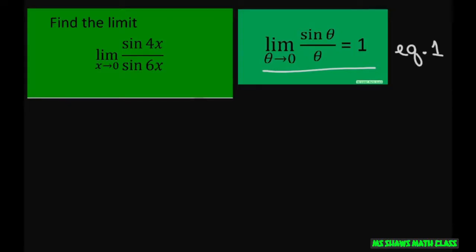So limit as theta approaches 0 of sine of theta divided by theta equals 1. So that's what we're going to try to work with here. So I'm going to rewrite this, our equation, and break it up a little bit. So I'm going to write this as sine of 4X divided by 1 times 1 divided by sine of 6X. Because we have two things going here. And what I'm going to do with that, because remember we're trying to make it look like this. Now I don't have an X here. See, we need a variable in the denominator to make it look like this.